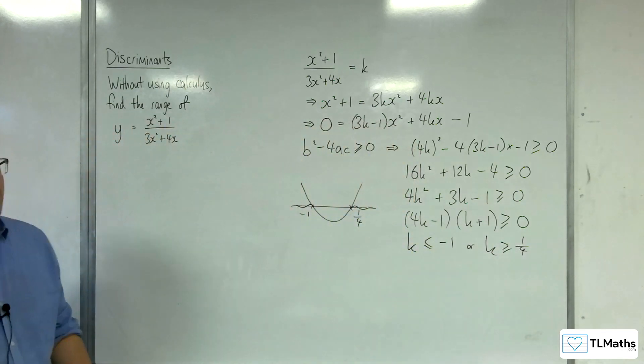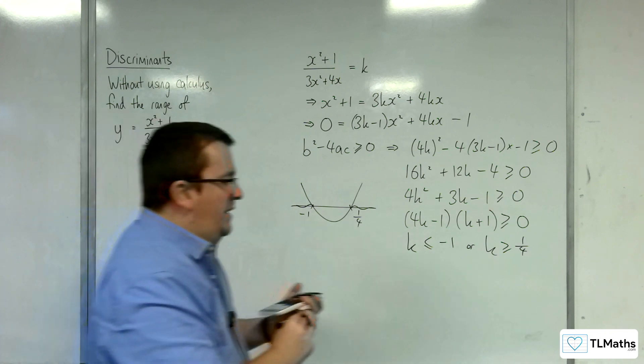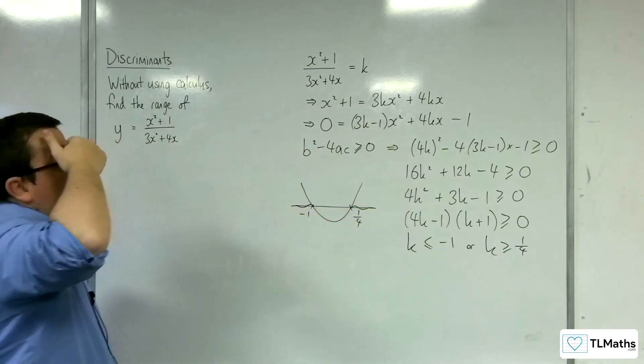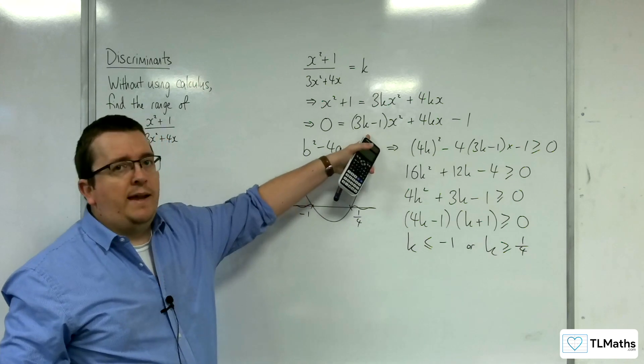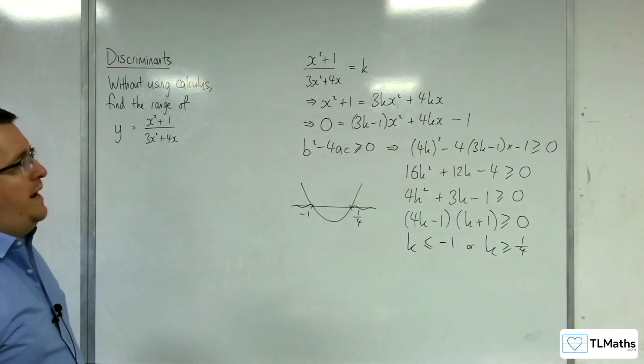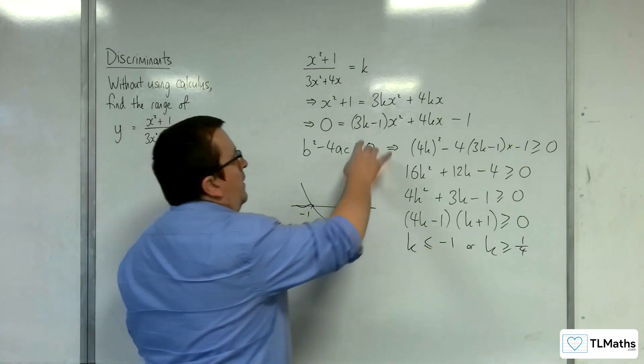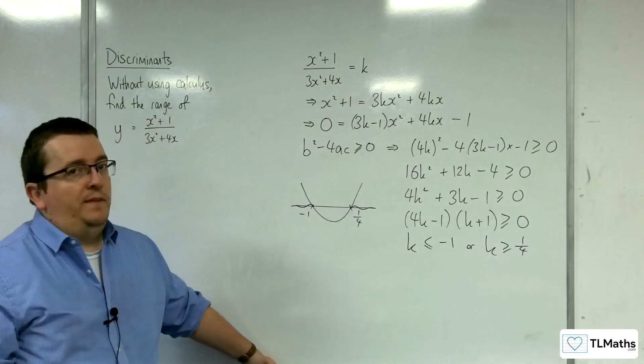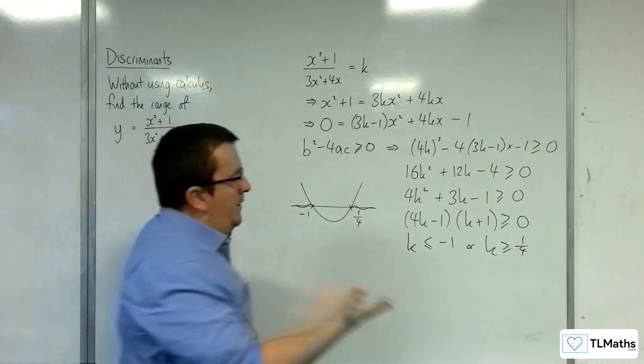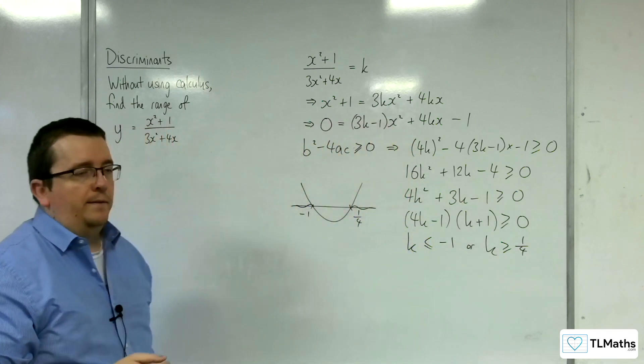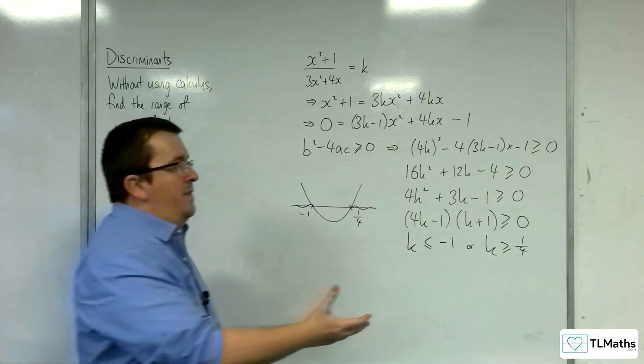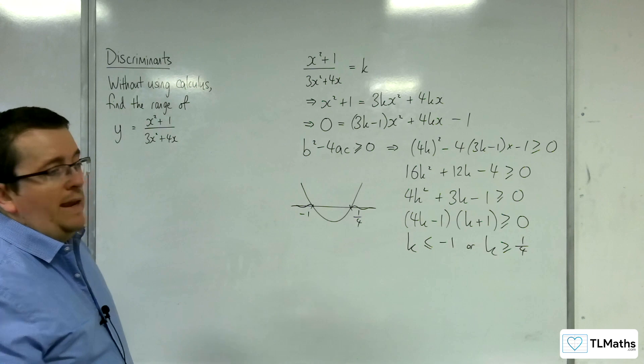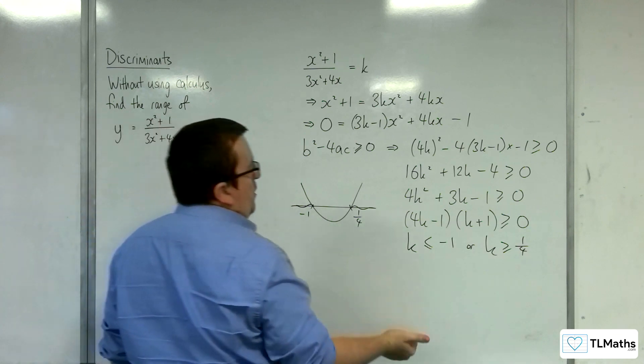Now, we do need to be careful because if you return back up here to this quadratic, the coefficient of x squared is 3k minus 1. So you need to also double check that k equals 1 third gives you something that is consistent. Because we're saying that k is going to be greater than or equal to 1 quarter here. 1 third is in that region, above a quarter. So does that mean that we've got a problem at 1 third?